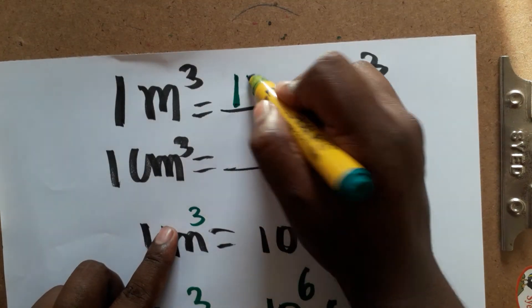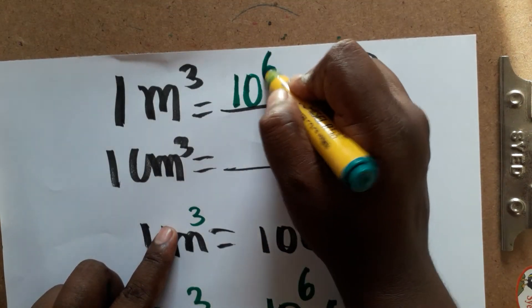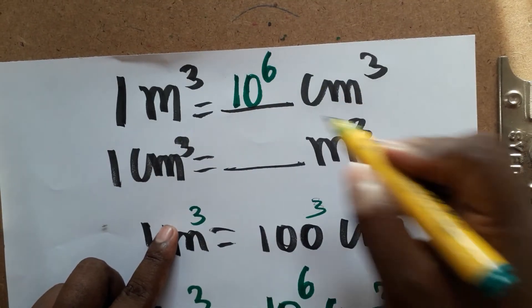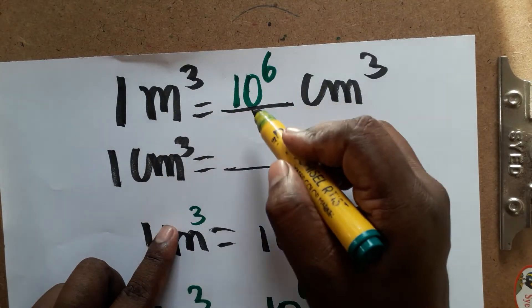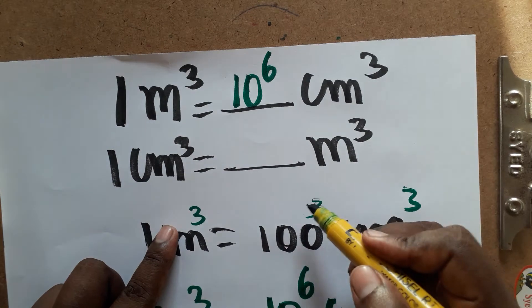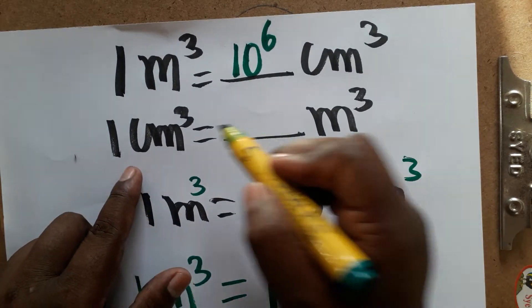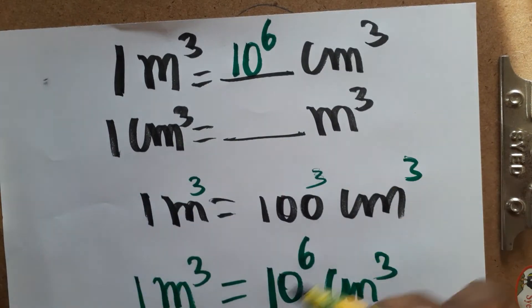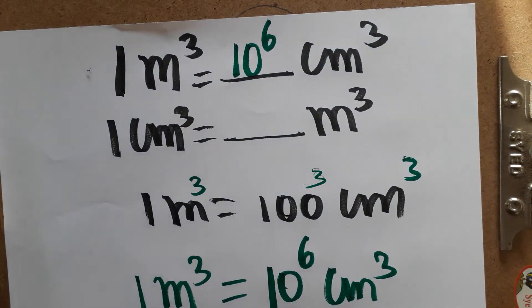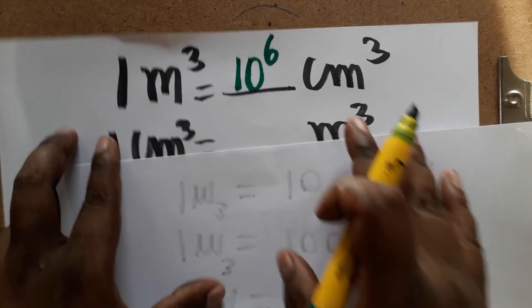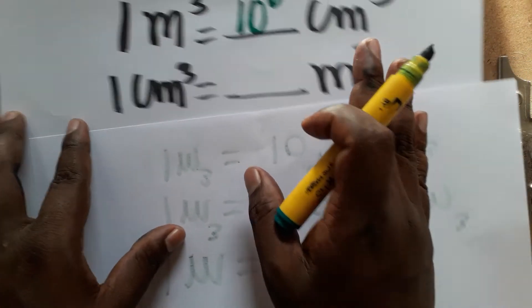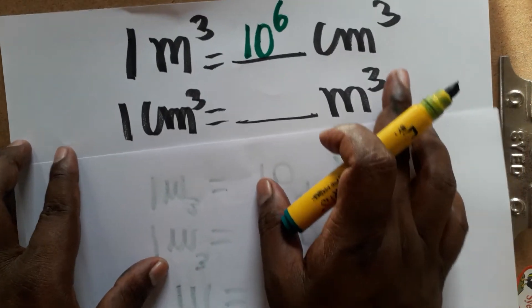So one meter cube is 10 power 6 centimeter cube. Now, centimeter cube is equal to dash meter cube — we need to find this reverse conversion.